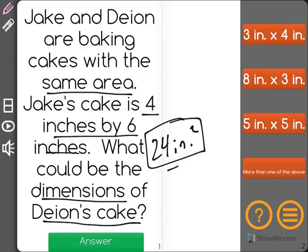Now, remember, when we multiply, that will tell us the area. So, if Dion bakes a cake with 3 inches by 4 inches, 3 times 4 is only 12 inches squared. That can't be one.